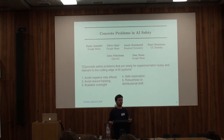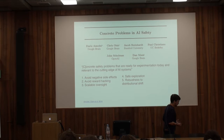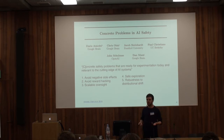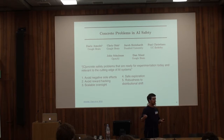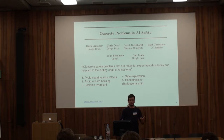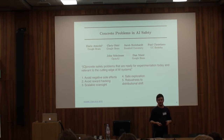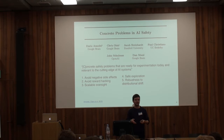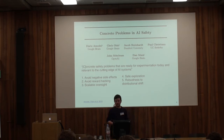The fourth issue is safe exploration. Even if we succeed in all these things, agents still need to be trained, and one aspect of training is exploration — sometimes an agent needs to try actions it hasn't tried yet to see how much reward they yield. In sufficiently high-stakes settings, we don't want the agent to actually try out something with very bad consequences. When you have a self-driving car, you want it to stay in its lane without first having to crash into another car to learn that's not what it should do.